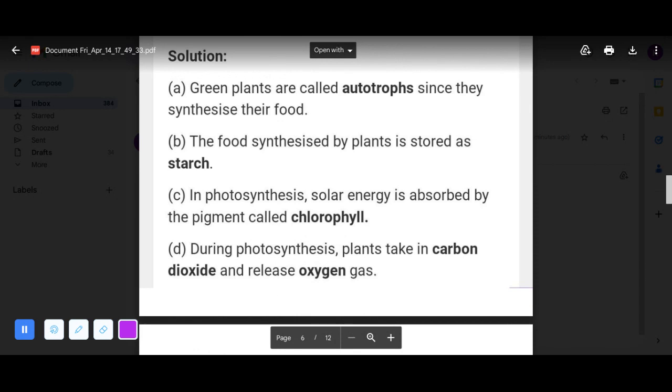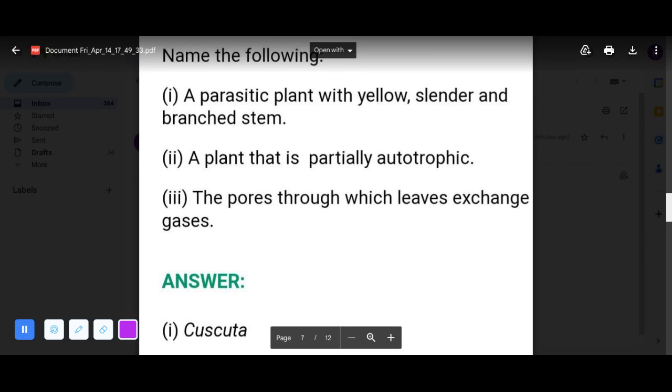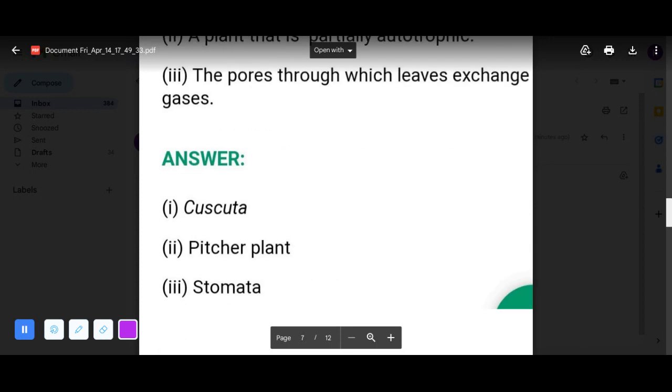Now next question, question number seven: name the following. A parasitic plant with yellow slender and branched stem. What is it? Let's check. It is cuscuta or amarbel. Next question: a plant that is partly autotrophic? Pitcher plant. The pores through which leaves exchange gases? Stomata.